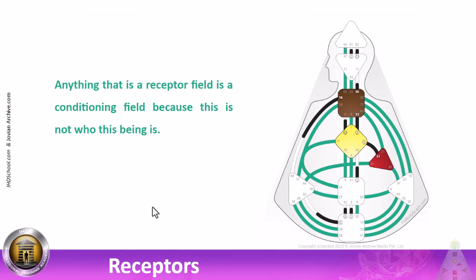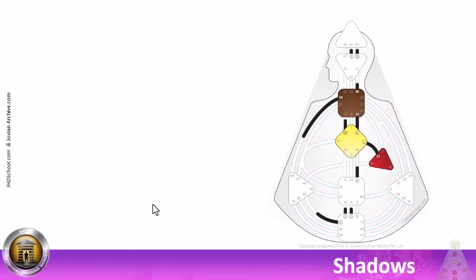Receptor field is not who this being is. Every single one of these channels, all 23 have a strategy. Shadows, remember. 23 open channels.